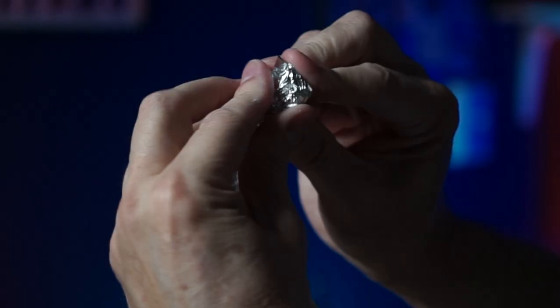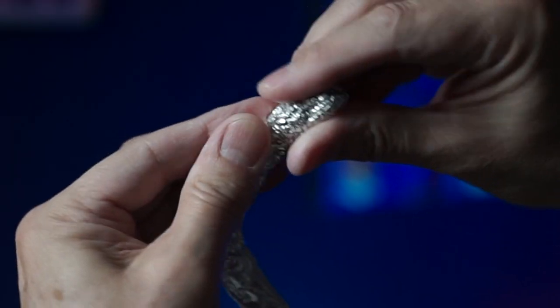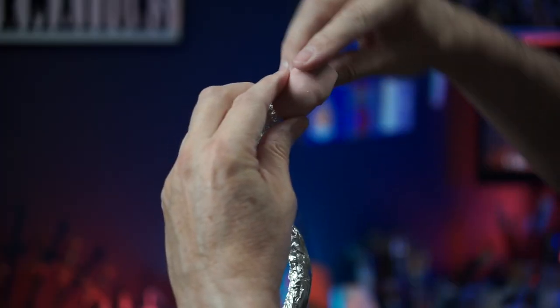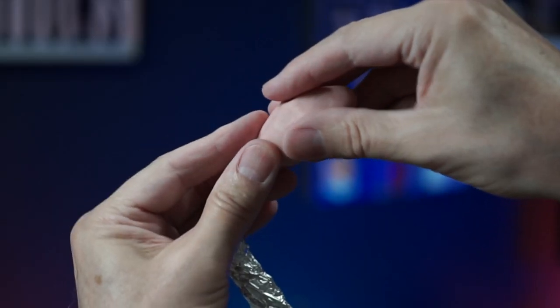This little guy is going to have himself a nice little set of sharp chompers, so I'm going to use the Super Sculpey Beige mixed with red flocking to make his gums.